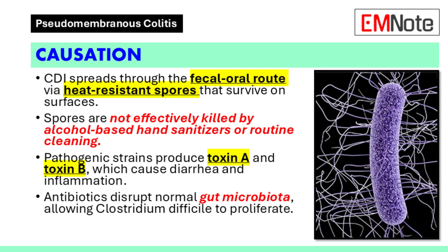Causation: Clostridium difficile infection is spread through the fecal-oral route. The bacterium forms heat-resistant spores that can survive on surfaces for extended periods. These spores are not effectively killed by alcohol-based hand sanitizers or routine surface cleaning. Once ingested, the spores pass through the stomach and germinate into vegetative cells in the colon upon exposure to bile acids.